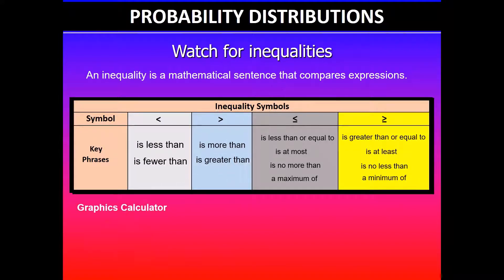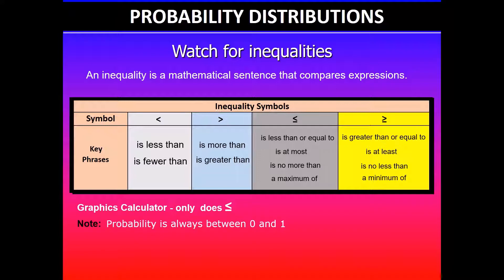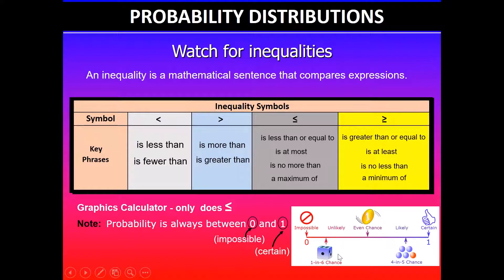We'll be using a graphics calculator. You will need to know that graphics calculators are programmed with less than or equal to. Also note that probabilities will always lie between zero and one. Zero means it's impossible to occur, whereas one means certain. This diagram denotes all the likely outcomes. So impossible means it cannot occur, certain means it has a 100% chance of occurrence, and somewhere in between is the likelihood of an event occurring.